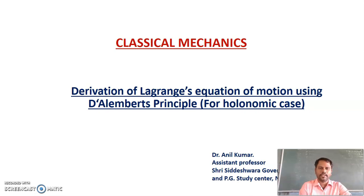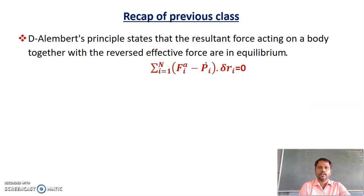Note that the Lagrangian equation is a reformulation of Newton's second law of motion. In the previous class we learned D'Alembert's principle, which states that the resultant force acting on a body together with the reverse effective force are in equilibrium. Mathematically it is given by summation from I equal to 1 to N of (F_iA minus P_i dot) into delta R_i equals 0.